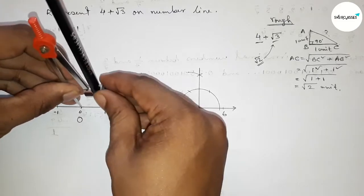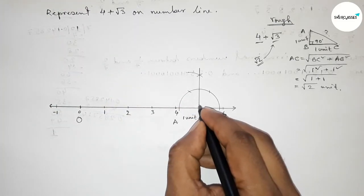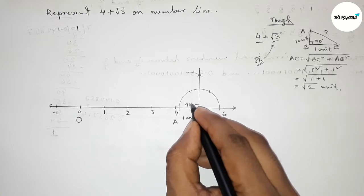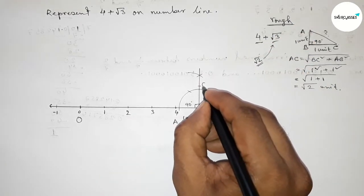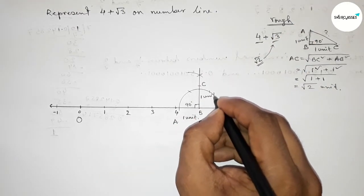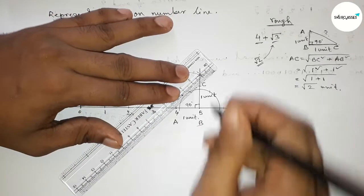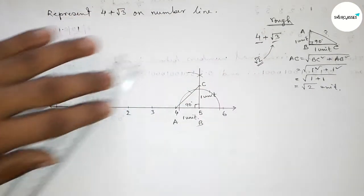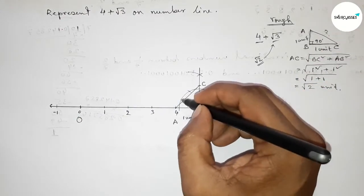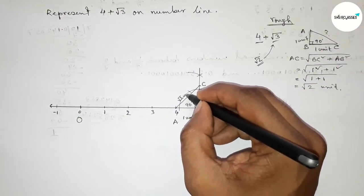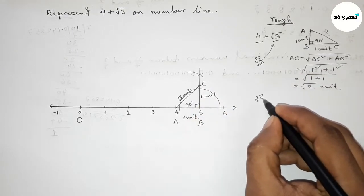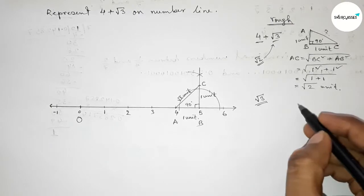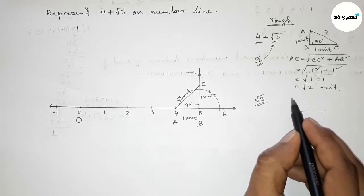We got a 90 degree angle at B. Now taking one unit length perpendicular at B, putting the compass on point B and cutting to get point C. This is 1 unit. Now joining A and C — from this we can say that AC is obviously root 2 unit length.